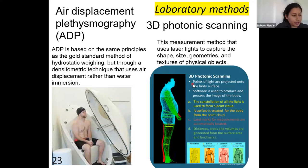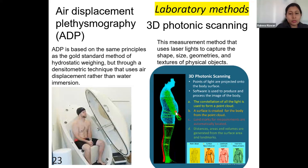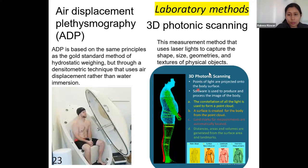Next is 3D photonic scanning. This is like a 3D scan of the whole body, giving body texture, size, shape, and geometry — referred to as anthropometry — and all body measurements related to photonic scanning. 'Photonic' means light waves. By projecting light waves, we scan the body texture, size, and geometric data — the physical properties of the body.